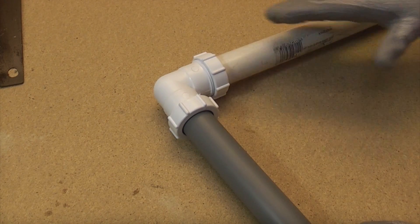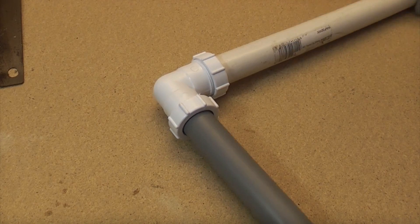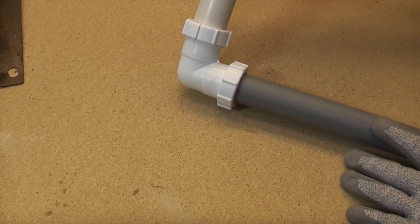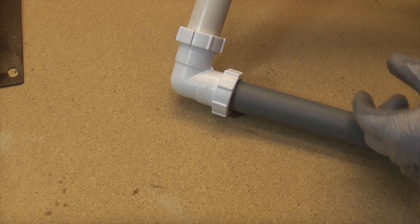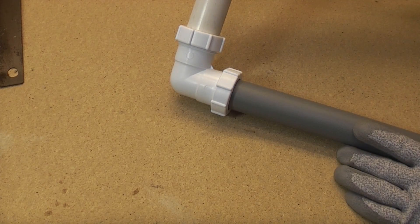So now we've got two different pipes that are connected together. We've got the push fit and the solvent weld. So when you come across waste pipe and you're struggling with the sizes because they're both a very similar size, that's how you connect the two together by using a compression fitting.